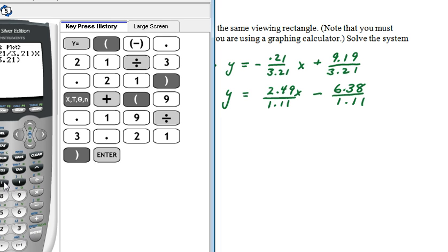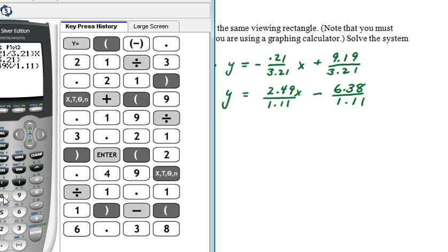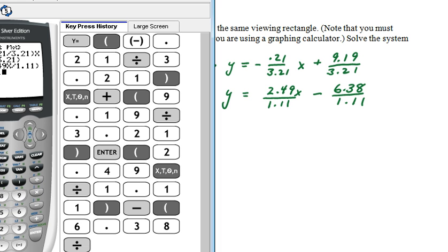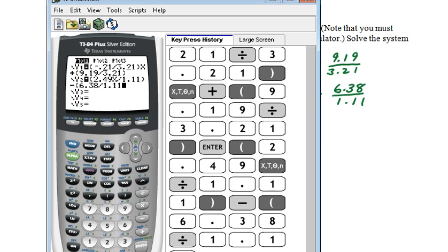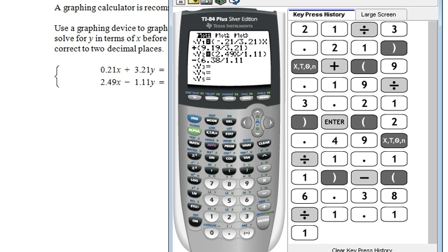And then parenthesis, 2.49x divided by 1.11, close the parenthesis, minus parenthesis, 6.38 divided by 1.11. Here's what I've entered on the graphing calculator.